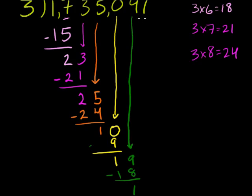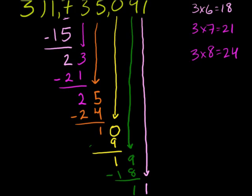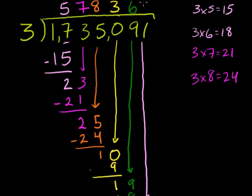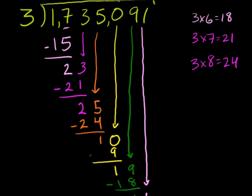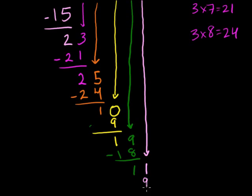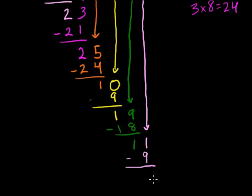And then we're almost done. I can revert back to the pink. We bring down this 1 right there. Bring down that 1. 3 goes into 11 how many times? Well, that's 3 times. Because 3 times 4 is too big. 3 times 4 is 12. So that's too big. So it goes into 3 times. So 3 goes into 11. 3 times 3 is 9.